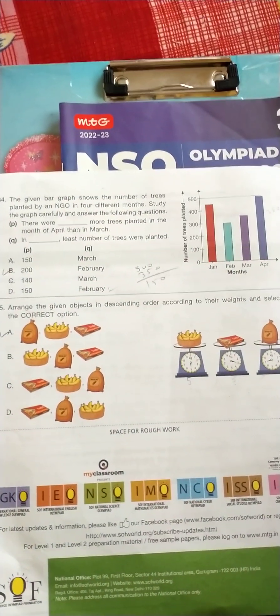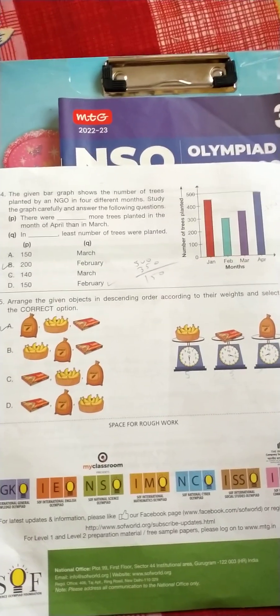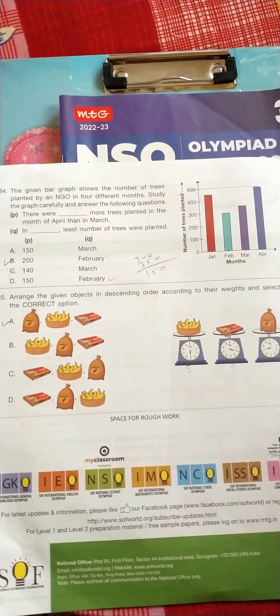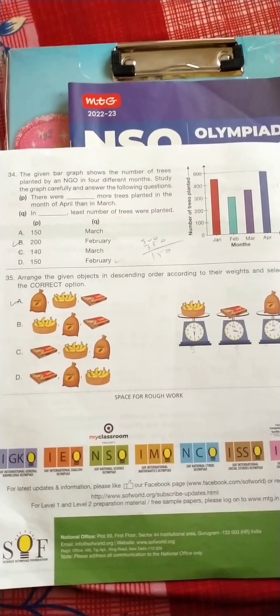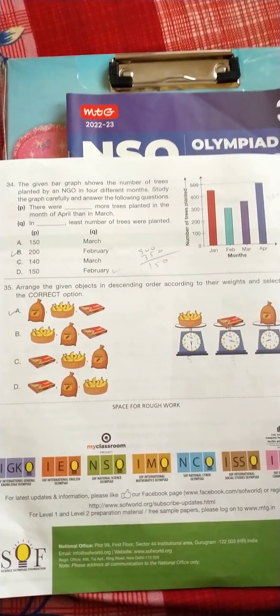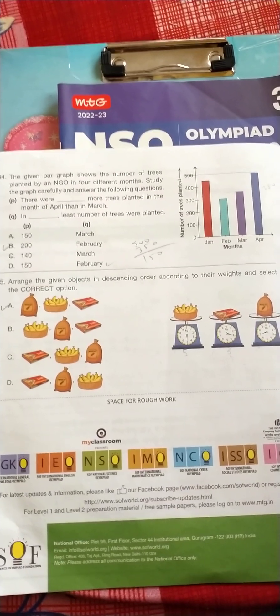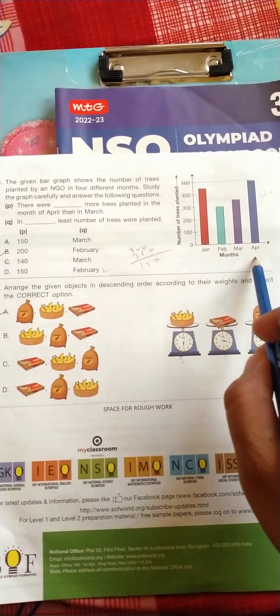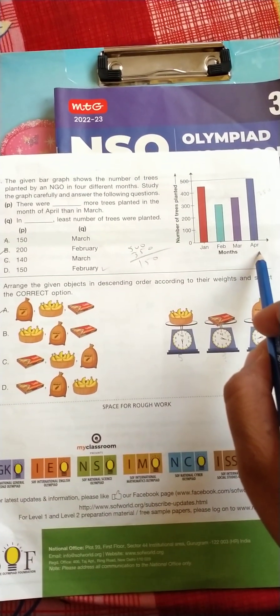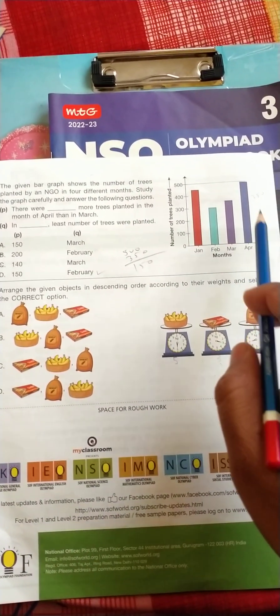Question number 34: the given bar graph shows the number of trees planted by an NGO in 4 different months. Study the graph carefully and answer the following questions. P: there was more trees planted in the month of April than in the March. So in the month of April there is planted 500 trees.